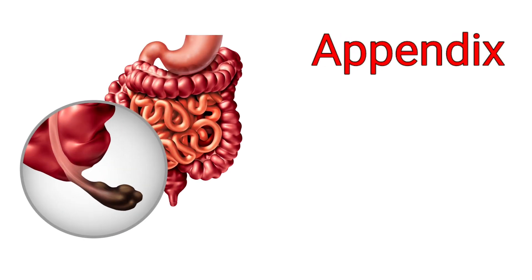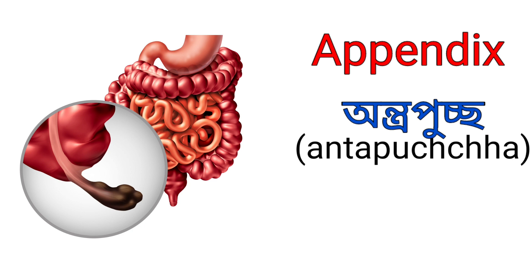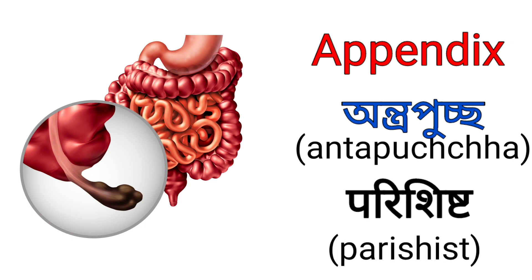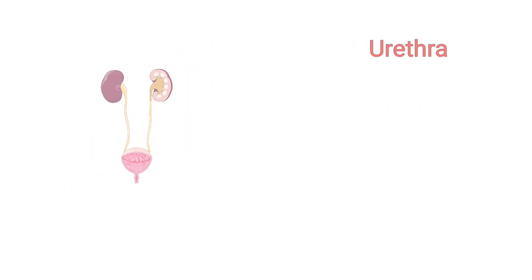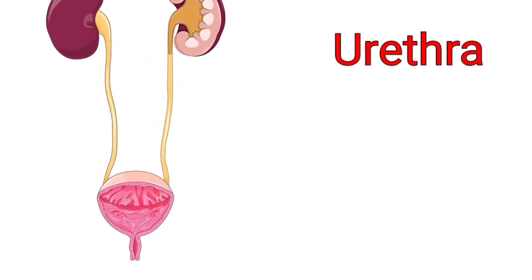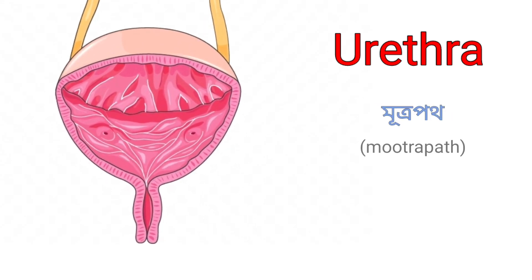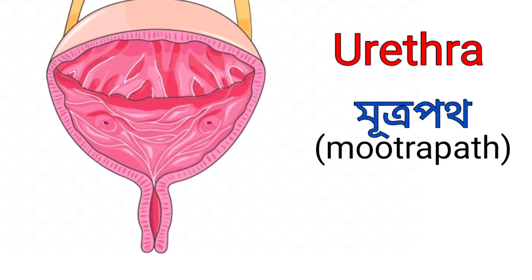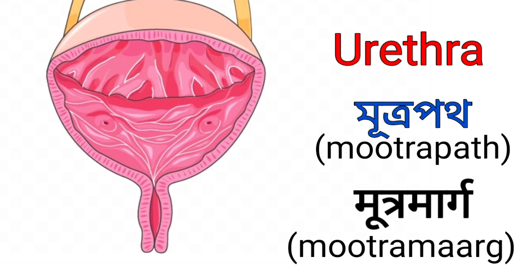Appendix. It's called Antra Pusho in Assamese and it's called Parishisht in Hindi. Urethra. It's called Mutra Pot in Assamese — that means Mutra Dar — and it's called Mutra Marg in Hindi.